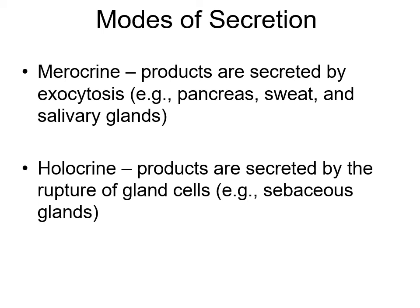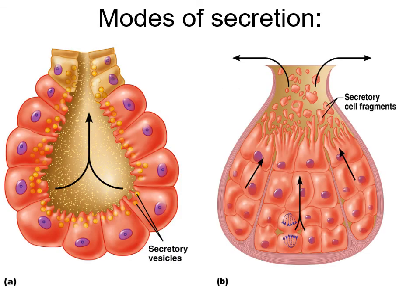Different modes of secretion: merocrine means cells produce their product secreted through exocytosis - like in the pancreas producing enzymes. Holocrine means the products are secreted by the whole cell rupturing - it builds up and the cell ruptures. Apocrine means the very top of the cell ruptures. So you have holocrine, apocrine, and merocrine modes of secretion.